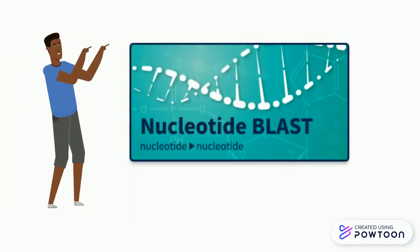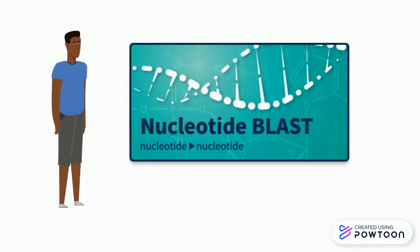BLAST-N, or nucleotide BLAST, is used when you have a query nucleotide sequence — an unknown nucleotide sequence — and you search for similar sequences in nucleotide sequence databases like NCBI GenBank or ENA.